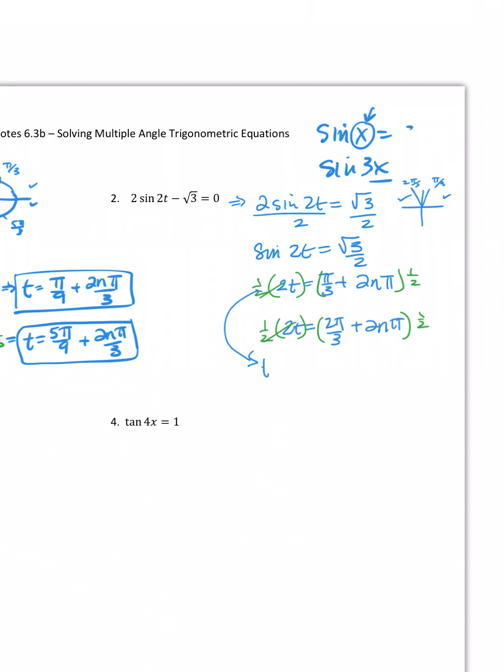So this becomes t equals one half times pi over three is pi over six, plus, all right, look, the twos will cancel out, so this just becomes n pi. This one, when I simplify, two pi over three times one half is going to be two pi over six, plus, the twos cancel out in pi. So there's my two solutions.